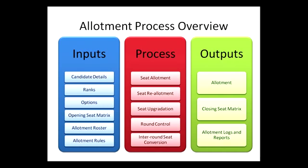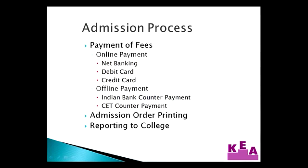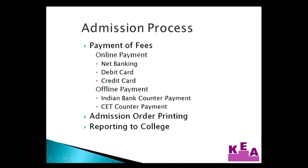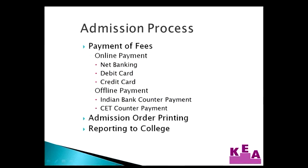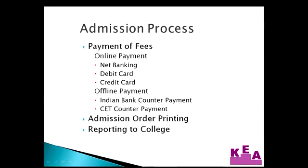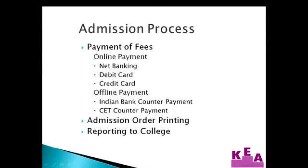The software also facilitates reports showing why a candidate did not get his or her higher options. A candidate who is allotted a seat in an allotment session can take admission through the admission process. The admission process consists of three compulsory steps: the payment of fees, getting the admission order, and reporting to the college. The payment of fees can be done either through online or offline modes. The online mode offers payment of admission fees using internet banking, credit card, or debit card. Candidates choosing the online mode can download and print the admission order immediately after the completion of payment.